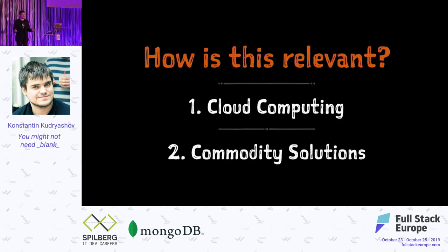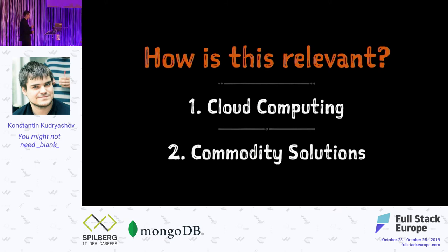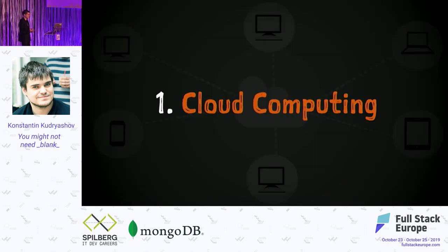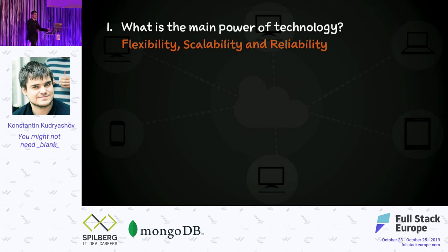How is this relevant to this conference? I think there are plenty of areas applicable to this rule set, but in particular there are two technologies — or two sets of technologies — that if we apply this analysis, we'll see interesting results. Those are cloud computing and commodity solutions. Let's start with cloud computing. Cloud computing is basically your Digital Oceans and AWS as early-stage developments, then second-generation cloud platforms as a further development. What is the main power of the technology? Go to the AWS or Digital Ocean website and you'll see: flexibility, scalability, and reliability out of the box.